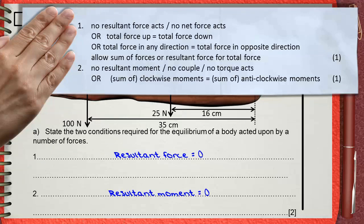You can say no resultant force acts, or no net force acts. In another form, you can say the total force upwards equals the total force downwards. Another form is the total force in any direction equals the total force in the opposite direction.